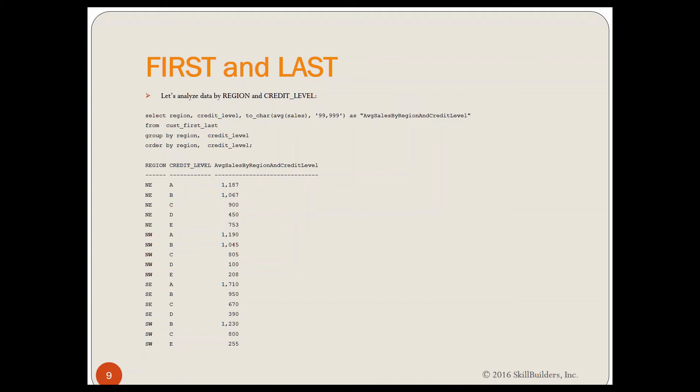So the first thing you might say is, well, that's pretty easy. I don't need a first and a last. I'll just say where credit level is an A or an E. All right, is an A comma E. That works fine for Northeast and Northwest, but look what happens in other cases.